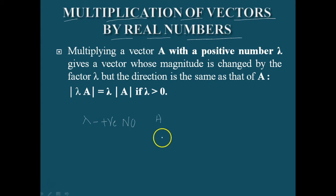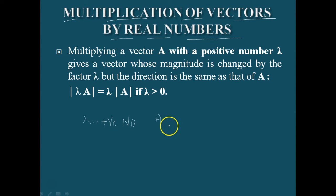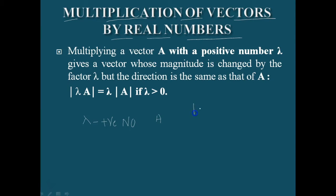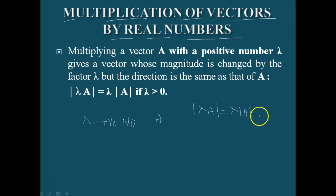The overall magnitude of the vector is increased by delta, but the direction will not change. Because we are just multiplying a quantity, we are not changing the direction. The direction is the same as that of A. If you multiply delta to vector A, then the magnitude is changed by a factor delta.